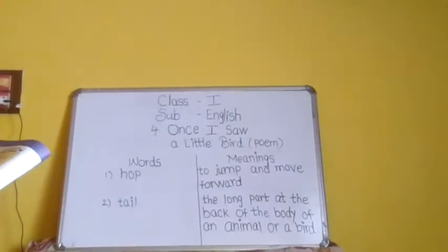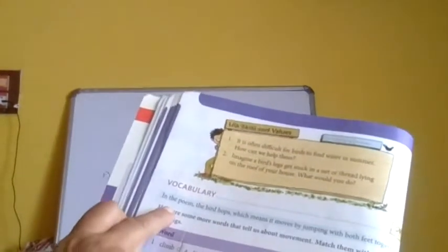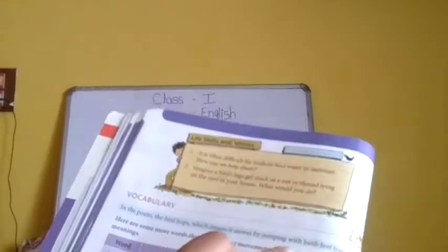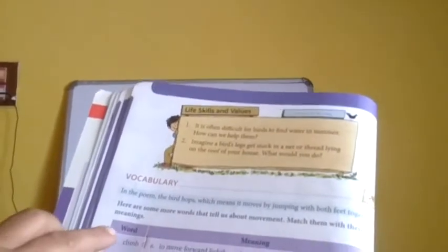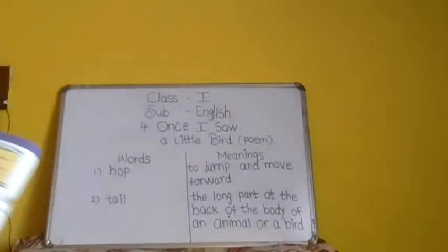We have some meanings and we have to match them. Here are some more words that tell us about movements. Match them with their meanings. Here I am reading the words: climb, roll, skip, and swim. Climb means to go to the top.